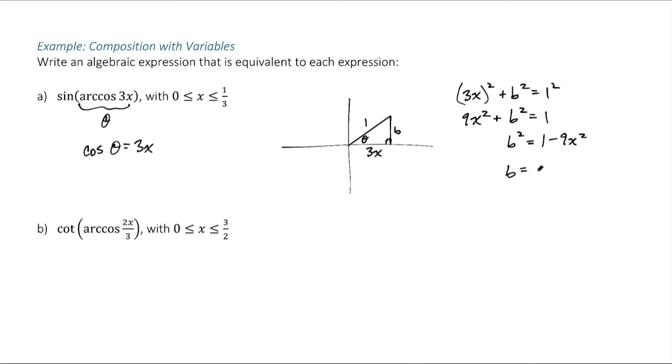And then we solve for b. Take the square root. Now, when you do a square root, normally you get a plus or a minus. However, based on our location here in the first quadrant, we know that b will be positive. All right, so now I have b.